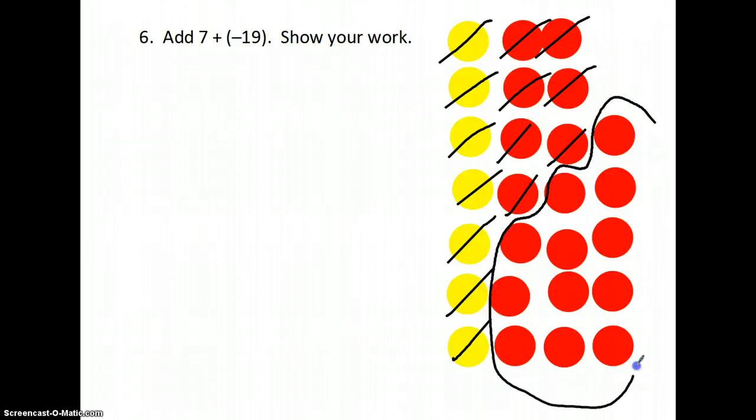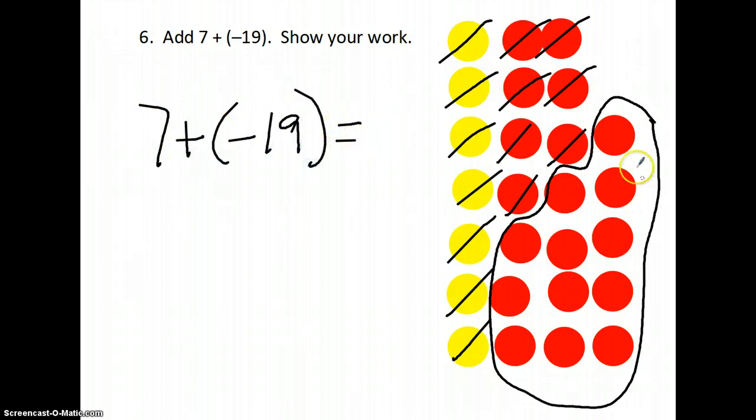So what's left that hasn't been crossed out is my answer. So 7 + (-19) is -1, 2, 3, 4, 5, 6, 7, 8, 9, 10, 11, 12. Another way you could think of this is the sign: you ask yourself, are the signs the same or are they different? Well, 7 is positive, 19 is negative, so they're different. So you take the bigger value, which is 19, minus 7, which is 12, and you keep the sign of the bigger absolute value, which is negative, and that makes it -12.